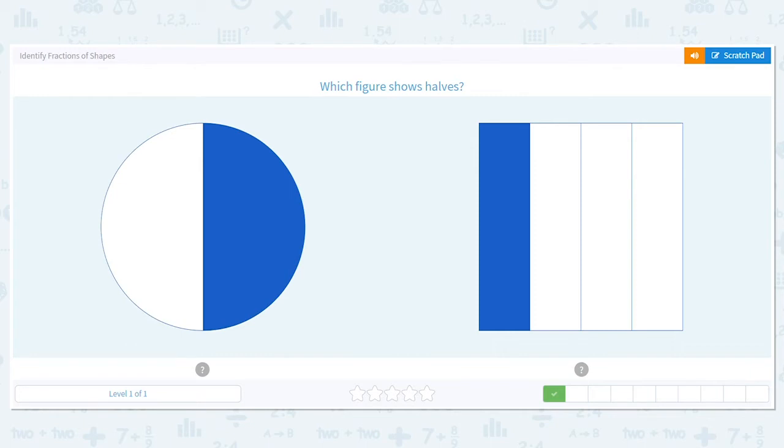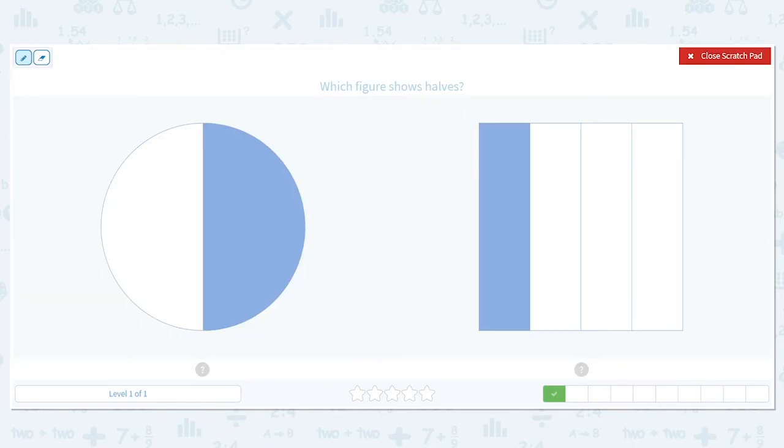Next one, which one here shows halves again? Remember halves means two equal pieces. What fraction is this one? Each piece is one half. What about the square? This one would represent one fourth. So that doesn't work. We want the halves.